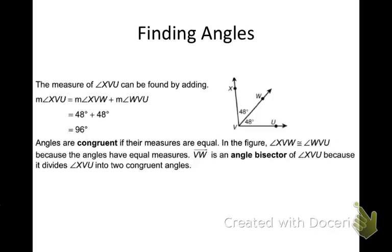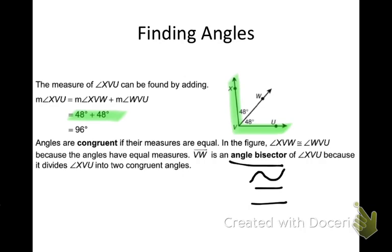We're going to start going into the tougher stuff. The measure of angle XVU — we're talking about the whole angle now. Our big angle can be found by adding the two part angles, similar to the segment postulates: if I add the two smaller angles, I get the whole angle. Angles are congruent if their measures are equal. Angle XVW is congruent to angle WVU, so VW is an angle bisector of XVU because it divides it into two congruent angles.